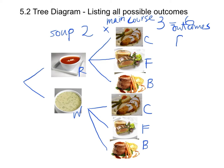We can write down all six possible outcomes: RC, RF, RB, WC, WF, WB.